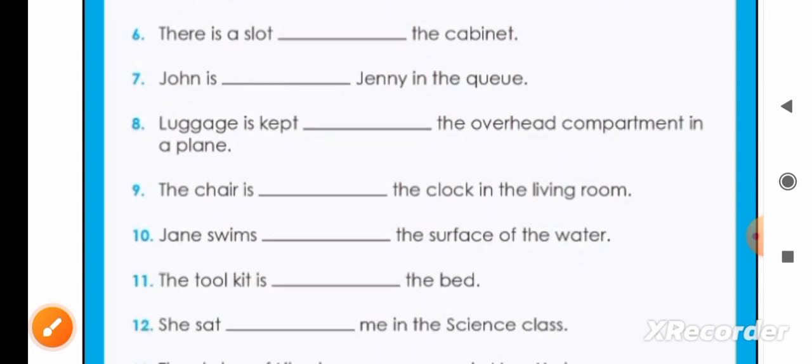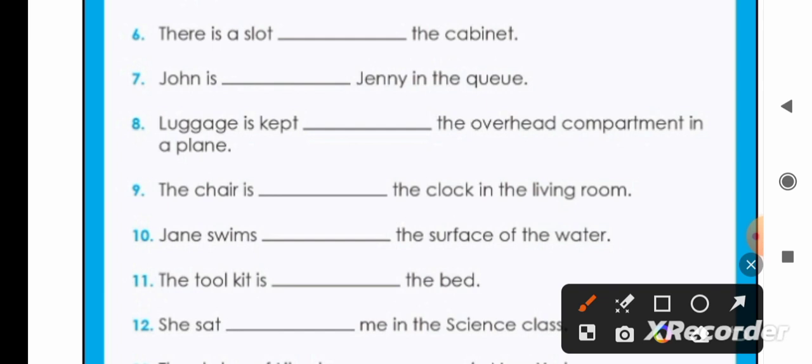Now see the sixth sentence: there is a slot of the cabinet, it will be of. Number seven: John is behind Jenny in the queue. Number eight: luggage is kept on the overhead compartment in a plane. The chair is below the clock in the living room.